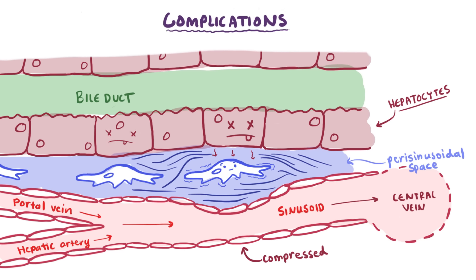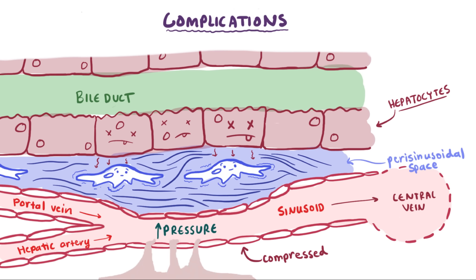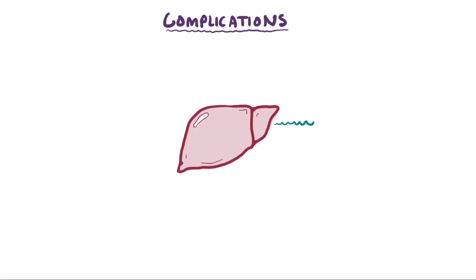As those central veins and sinusoids become compressed and push on the fluid inside, their pressure starts to build up, leading to intrasinusoidal — or sometimes called portal — hypertension, which is this higher pressure in the portal veins. Higher portal vein pressure means that fluid in the blood vessels is more likely to get pushed into tissues and across tissues into large open spaces, like the peritoneal cavity.